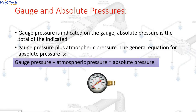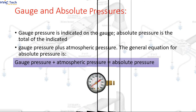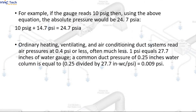Gauge and Absolute Pressures: Gauge Pressure is indicated on the gauge. Absolute Pressure is the total of the indicated Gauge Pressure plus Atmospheric Pressure. The general equation is: Gauge Pressure + Atmospheric Pressure = Absolute Pressure. For example, if the gauge reads 10 psig, then using the above equation, the absolute pressure would be 24.7 psi.